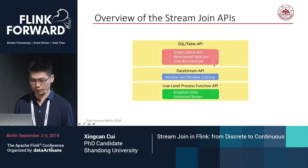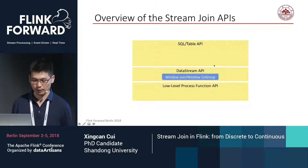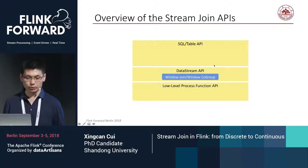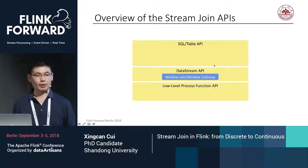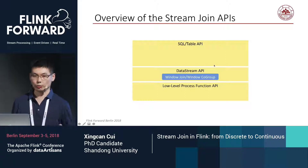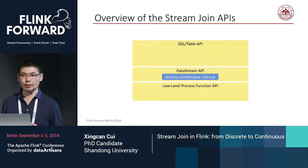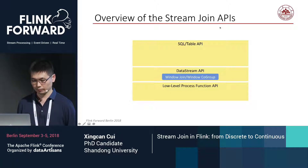Let's start from the window join and the window co-group, as they may be the earliest stream join-related APIs launched in Flink.